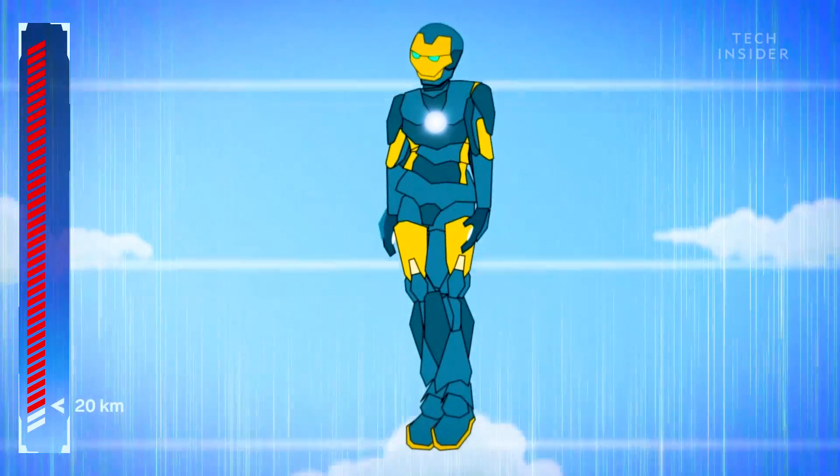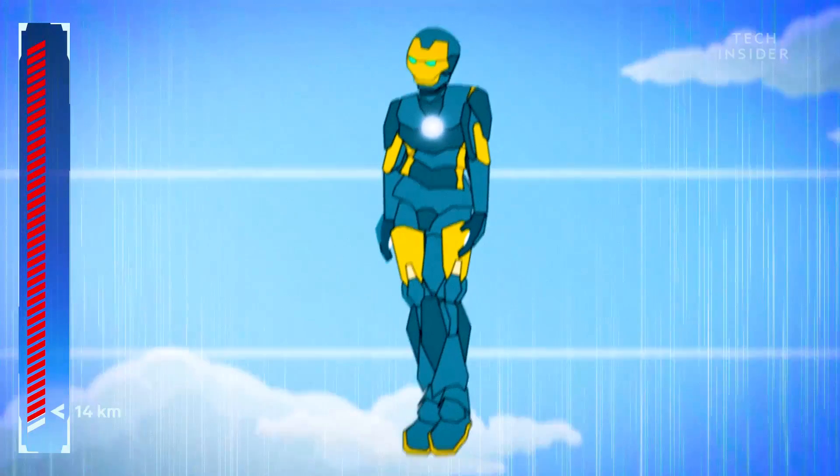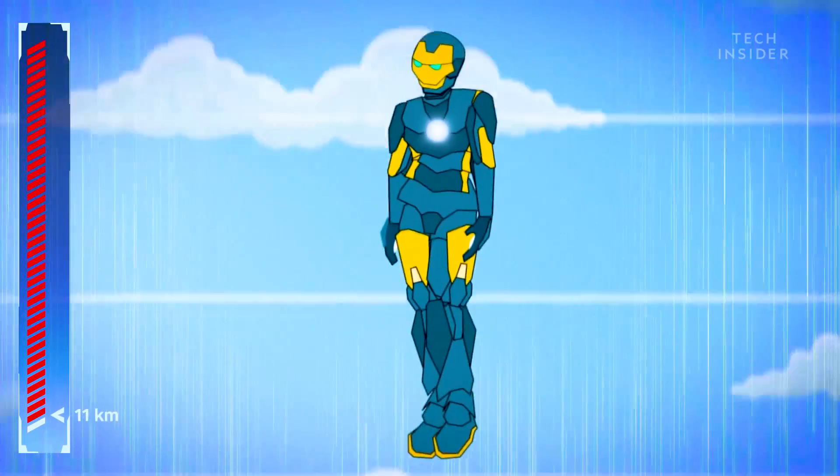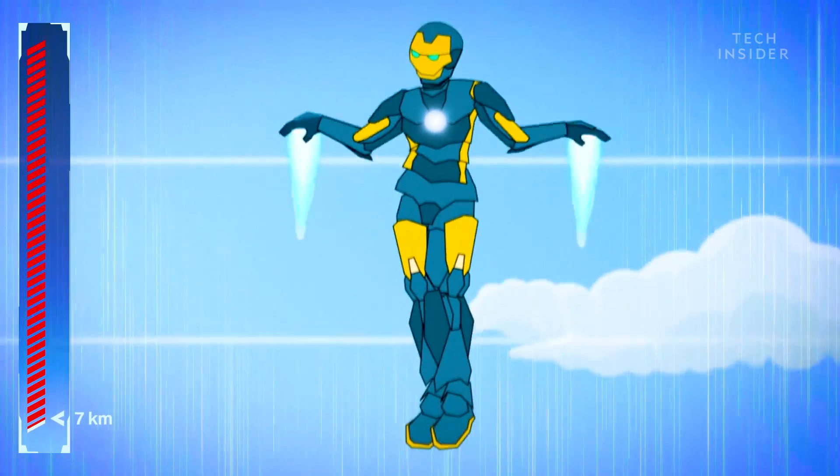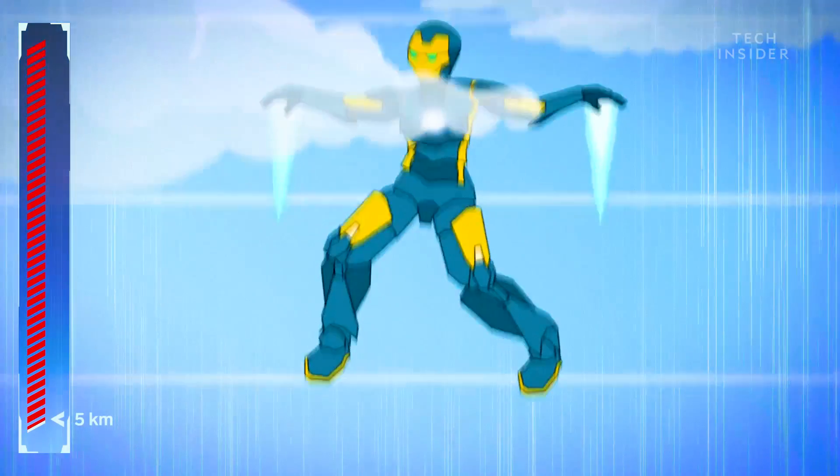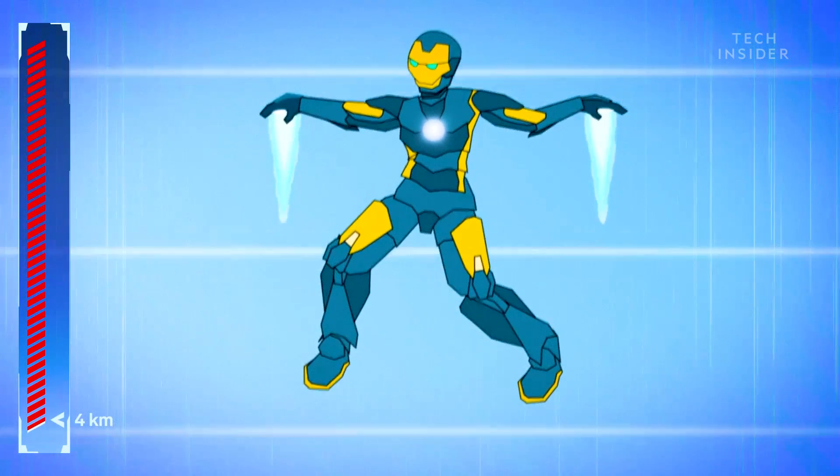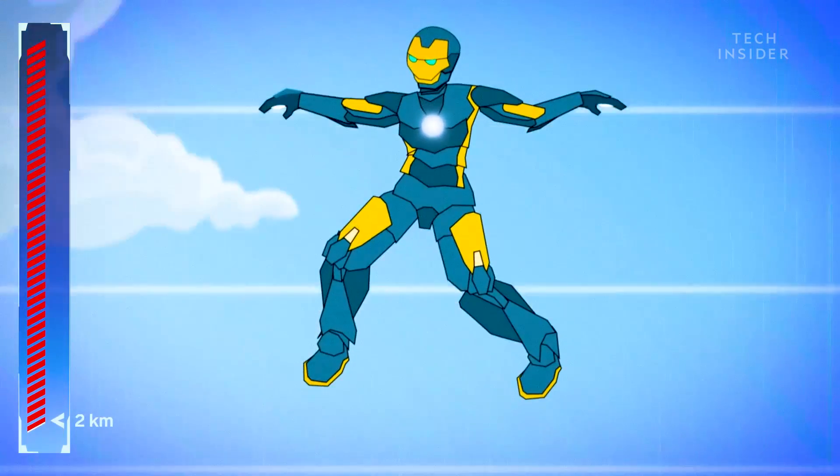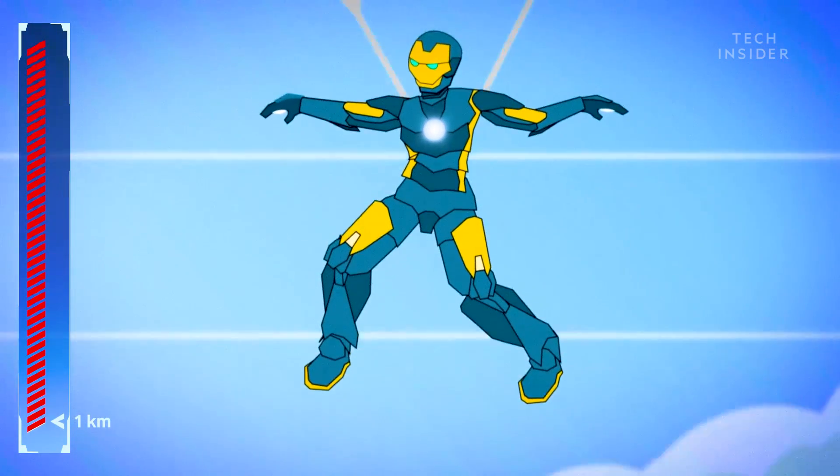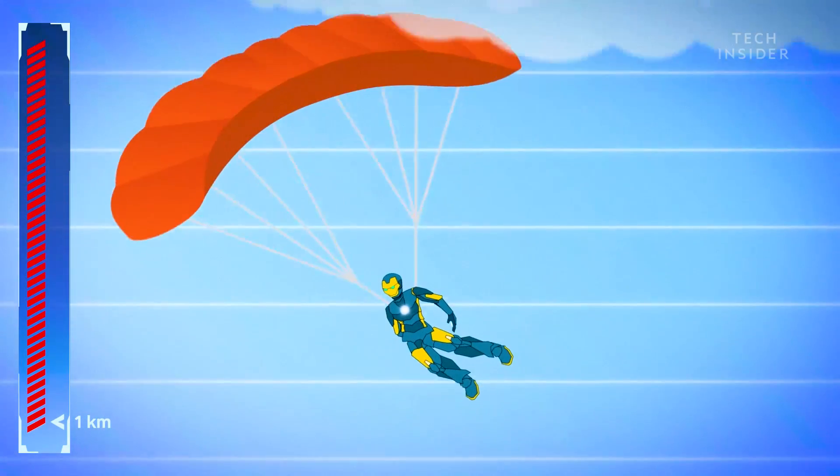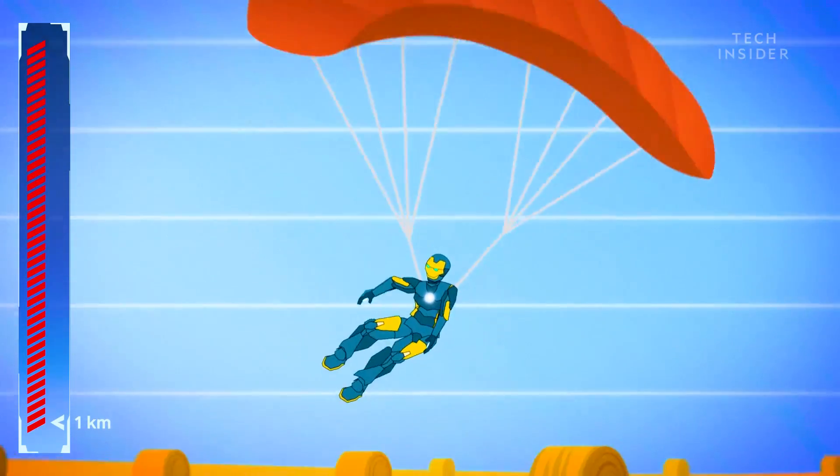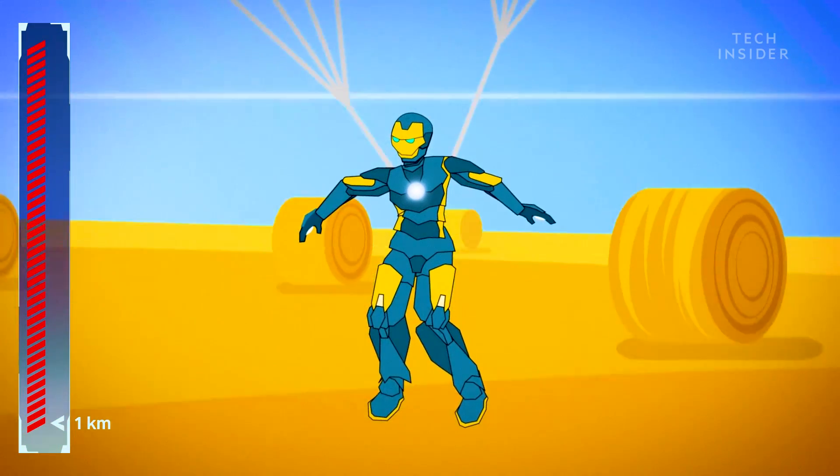So in reality, you're not going to slow down enough to safely deploy your chute. That's where Iron Man can help us one last time. By one kilometer up, you've reached the territory of ordinary skydivers who don't need fancy suits to survive. At this point, your parachute can do what it does best. And it's finally time to land softly.